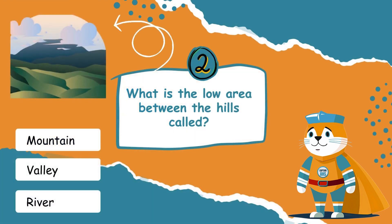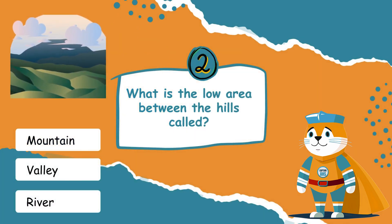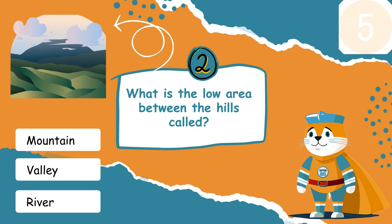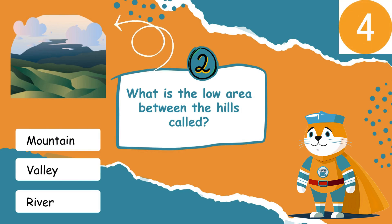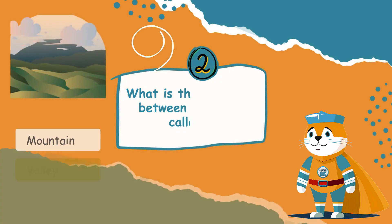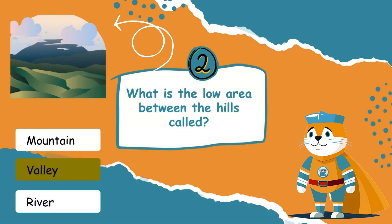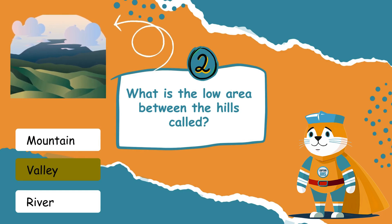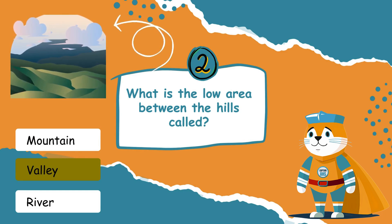Look at the image — what is the low area between the hills called? Excellent! A valley is a low area between hills or mountains, often with a river flowing through.